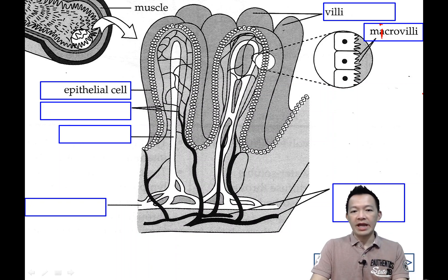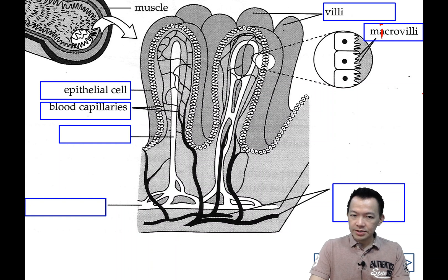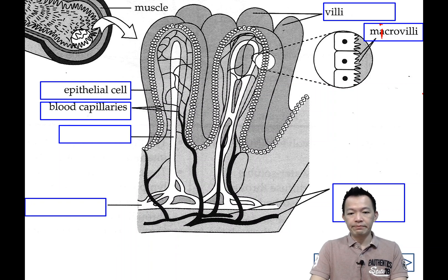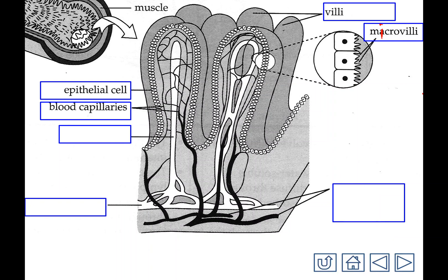Besides the wall, what do we have inside the villi? It contains a lot of blood capillaries (微血管). All the blood capillaries join together to absorb the food, and all the small blood capillaries join together to become bigger blood vessels. The bigger blood vessels finally join together to become arterioles (小动脉) and venules (小静脉).